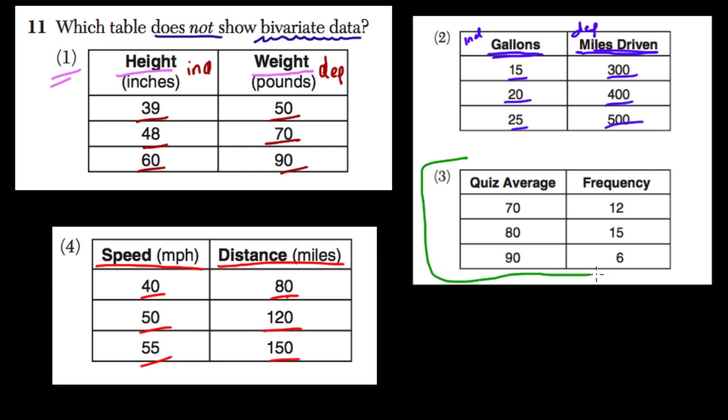This is a univariate table. Because, on the one hand, we're looking at quiz averages. That's one type of variable. On the other, we're looking at frequency. Well, that's another variable. But it's still univariate data.